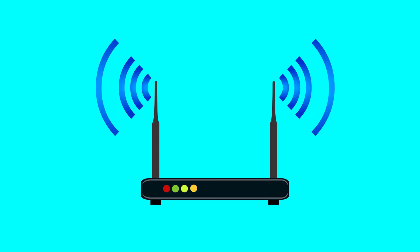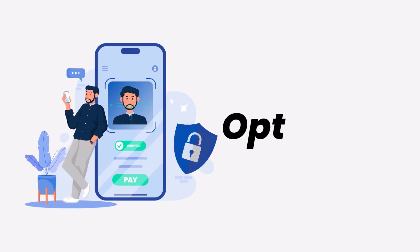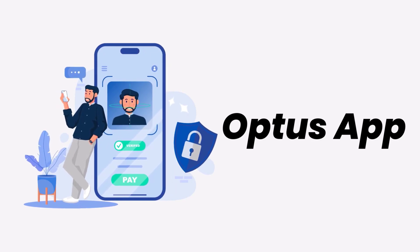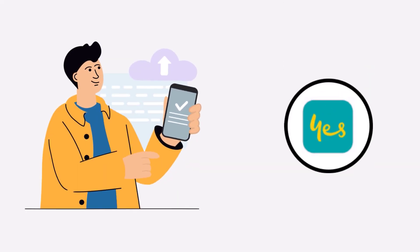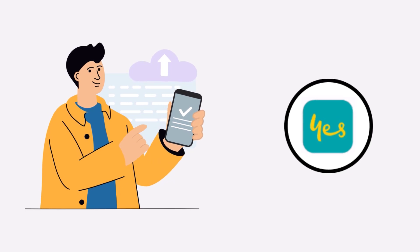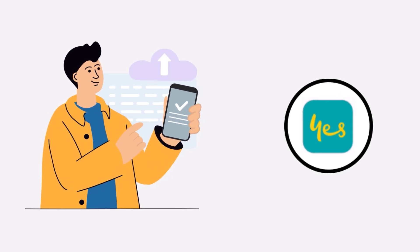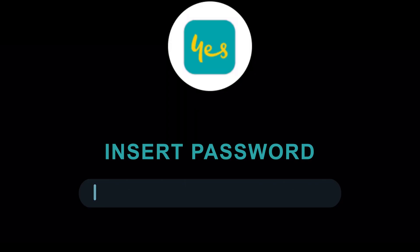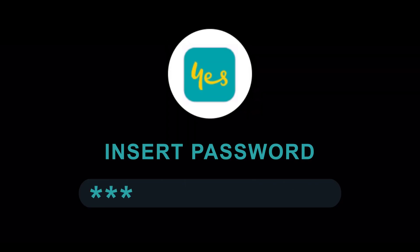It might be due to a connectivity issue, so first make sure you have a strong and stable internet connection. Do a quick test by opening an app that runs on the internet, other than the Optus mobile app, and check if it's working. You can also try switching from Wi-Fi to mobile data and vice versa.